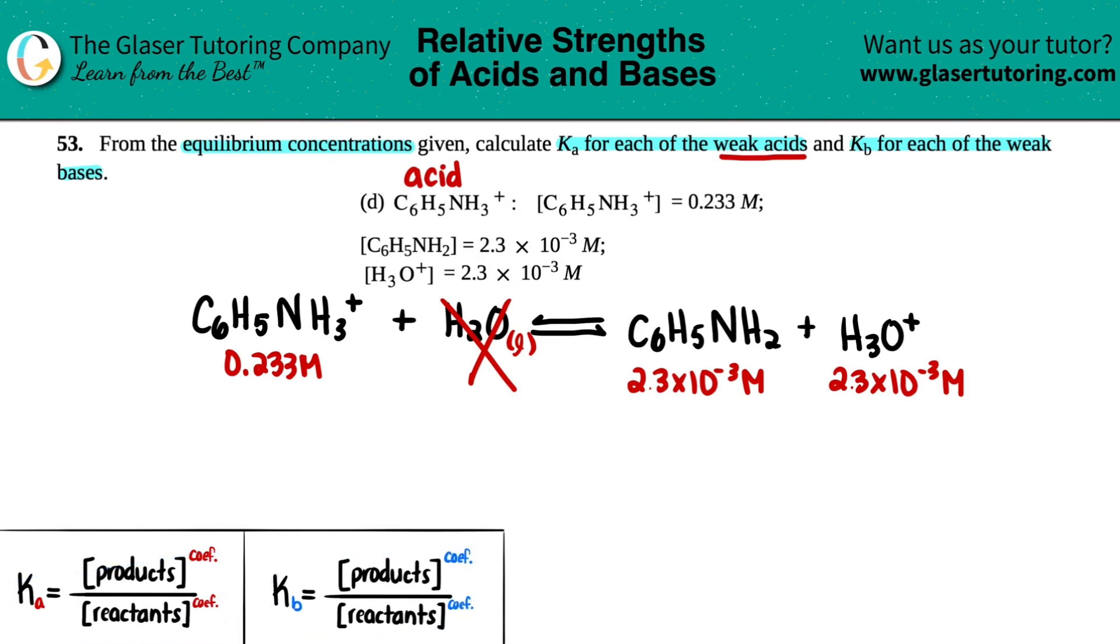Now we're going to use that Ka equation because we're dealing with an acid here. So Ka equals concentration of products divided by reactants. Two products divided by reactants. And remember, when you have two products, they are multiplied by each other, not added as they are in the equation.